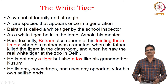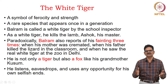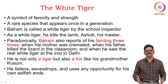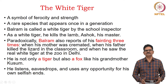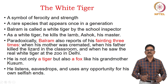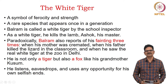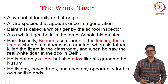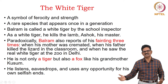Balram is identified by the school inspector as a White Tiger. Later, as a Tiger, Balram kills his master Ashok, who is symbolized as a lamb. We have the paradox of the White Tiger — Balram — fainting three times in the novel: first when his mother is cremated, second when his father kills a lizard in the classroom, and the last time on seeing the real White Tiger at the zoo in Delhi. Balram is not only a tiger but also a fox like his grandmother Kusum — he plans cunningly, eavesdrops, and uses any opportunity for his own selfish ends.